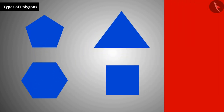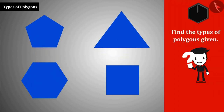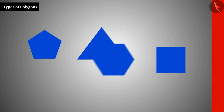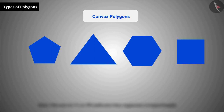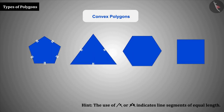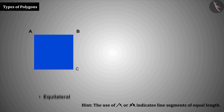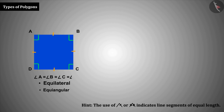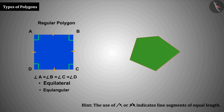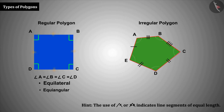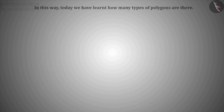Now let's look at some more polygons. These are called convex polygons. We notice that all the sides of these polygons are equal and all the angles are of equal measure. Polygons that are equilateral — all sides equal — and equiangular — all angles equal — are called regular polygons. On the other hand, polygons in which any one side or angle differs from the rest are called irregular polygons.